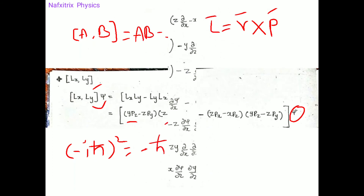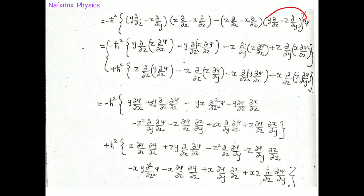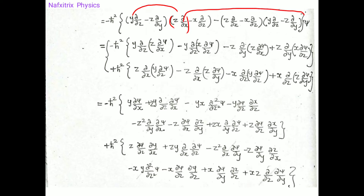After substitution we can see the transformation: px, py, pz are converted into operator form. The factor -ℏ² is taken as common, and we apply this entire expression onto the wave function. The first term involves y·(∂/∂z)(z·∂/∂x) operated on psi.